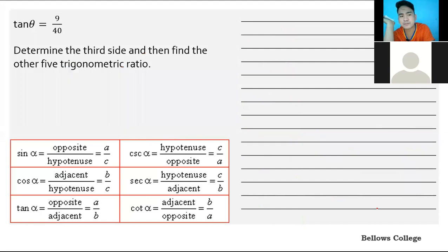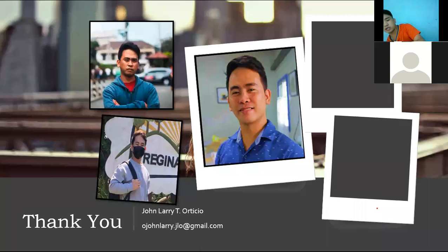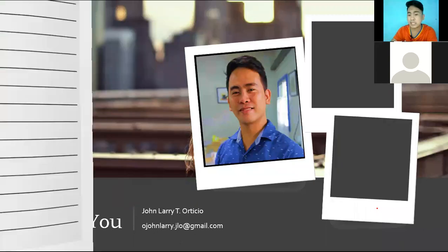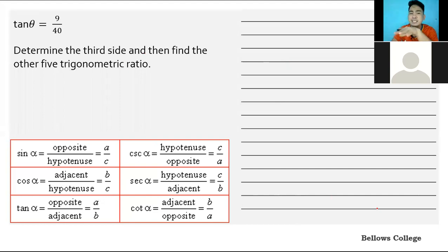Another example. The given is tangent theta equals 9 over 40. Determine the third side and then find the other five trigonometric ratios. Here we're given the tangent. We need to find the remaining five. How do we find the remaining five when we don't have a figure? We have to analyze this.